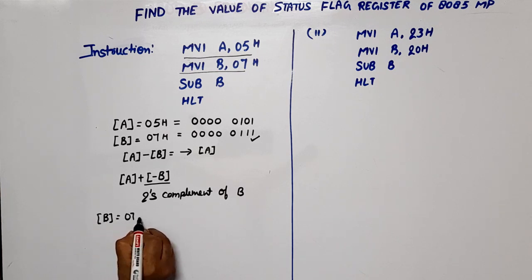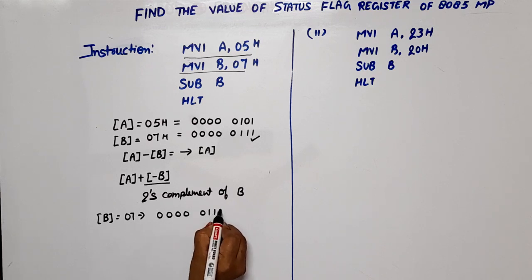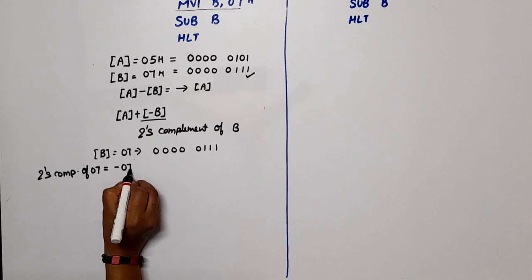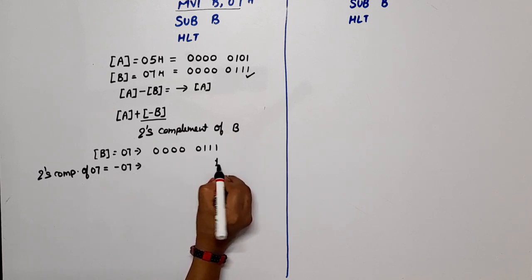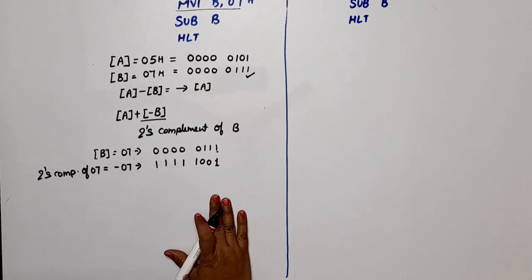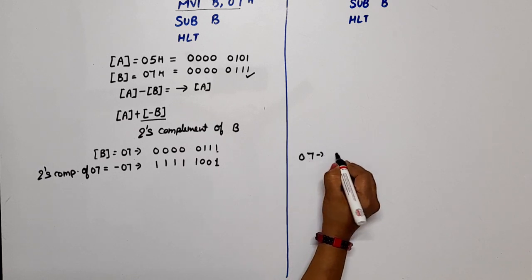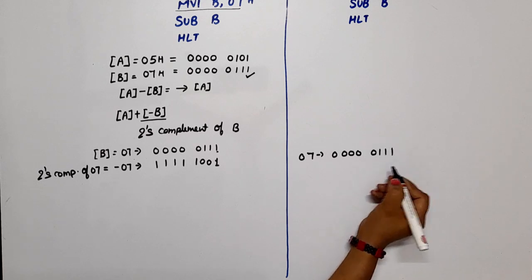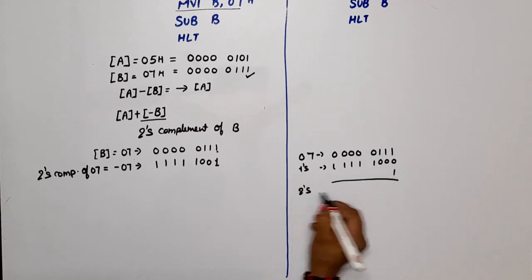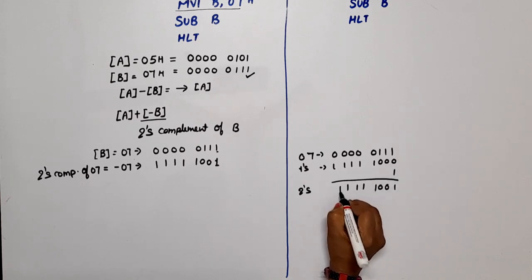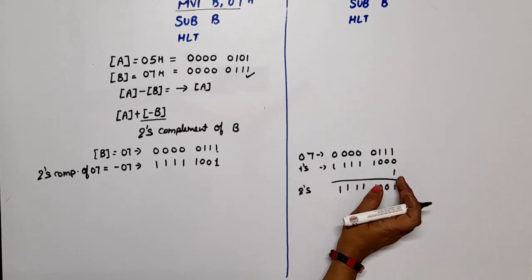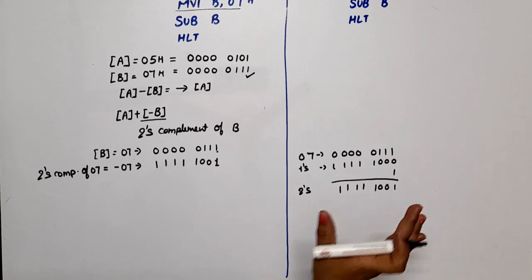The content of B is 07H, written in binary as 00000111. The two's complement of 07 equals minus 07. Using the direct method: take ones' complement of 00000111, which gives 11111000, then add 1 to get 11111001. Both methods — direct and ones' complement plus 1 — give the same result: 11111001.